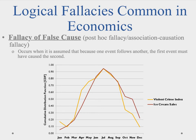This brings us to logical fallacies, which can be found throughout economics. The first is the fallacy of false cause, also known as the post hoc fallacy or association causation fallacy. This occurs when it is assumed that because one event follows another, the first event must have caused the second. In many cases, there may be an association between the two events, but one is not causing the other.